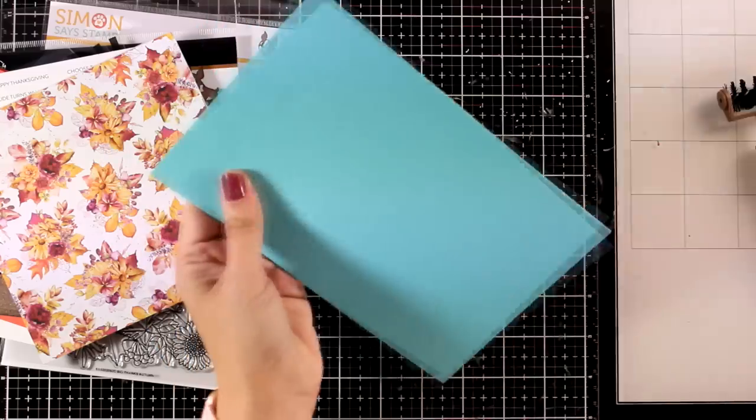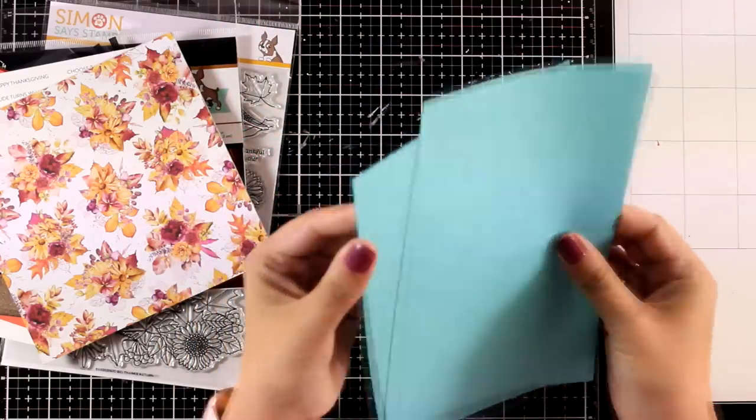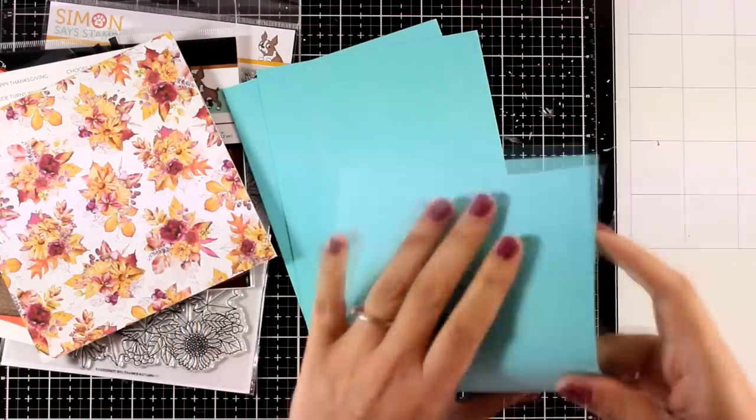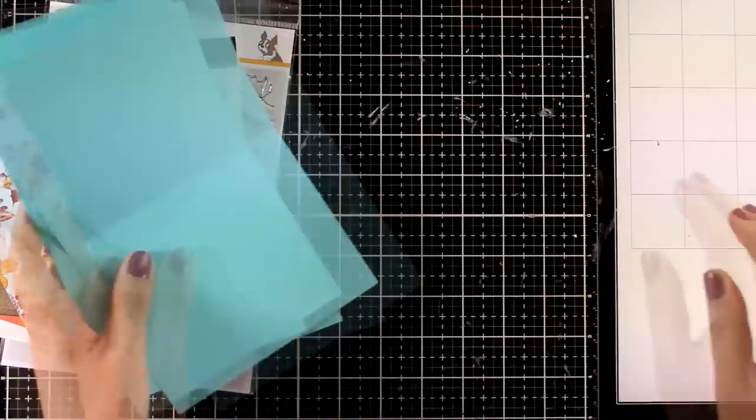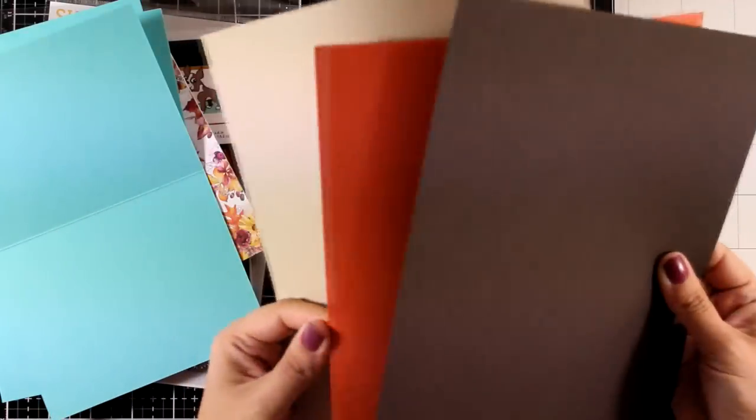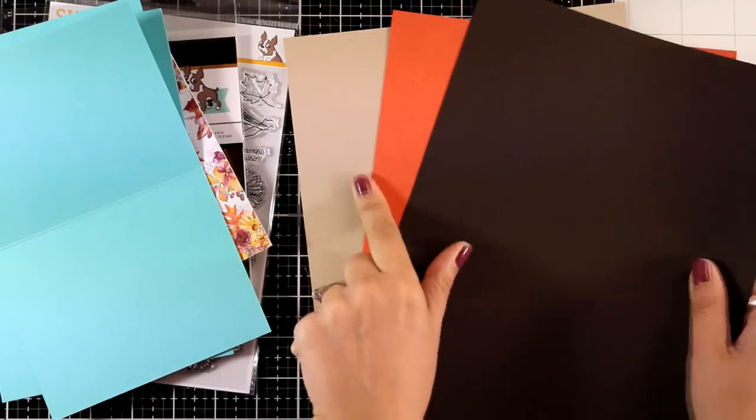These are three pre-folded card bases. And remember that if you like something and you don't want to get the whole kit, then you can find links below to every product individually. And finally, this is the cardstock that you get in three different colors.